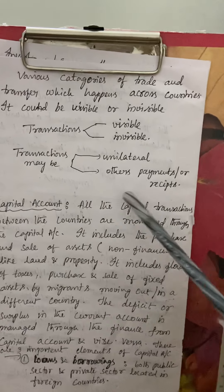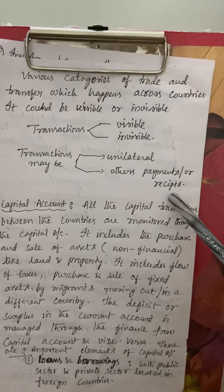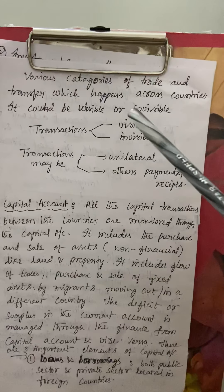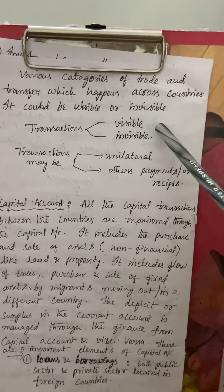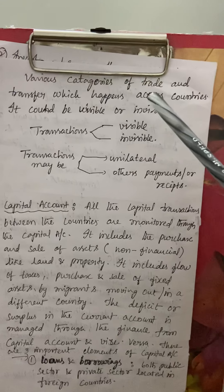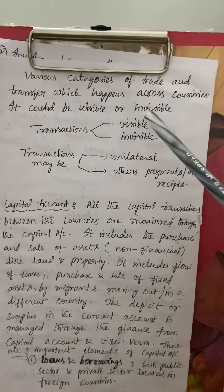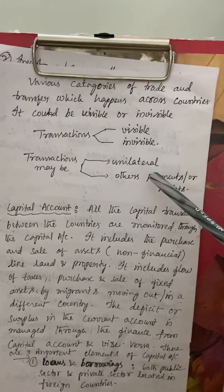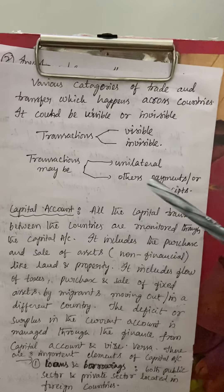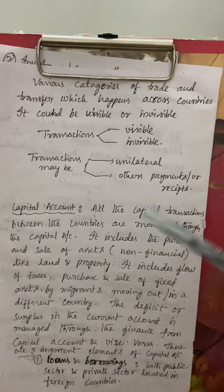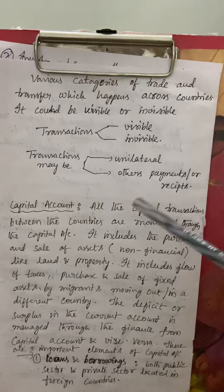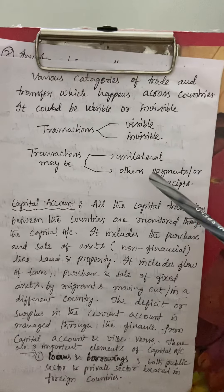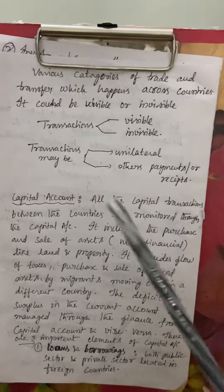Other payments or receipts come under another category. So in the current account, we can see transactions of visibles, invisibles, unilateral, and other kinds of payments. This is called the balance of trade, and together it forms the current account.